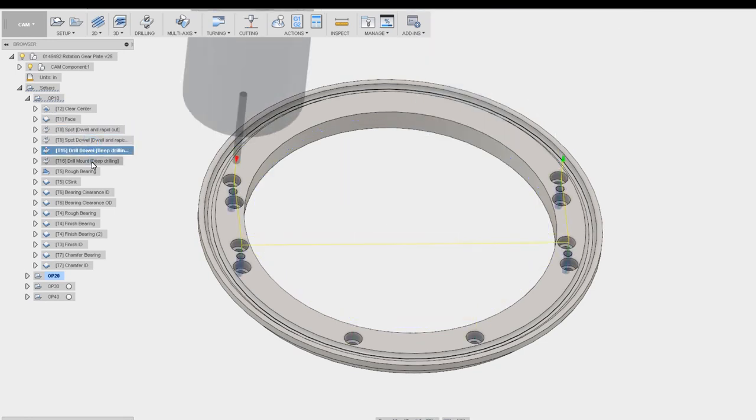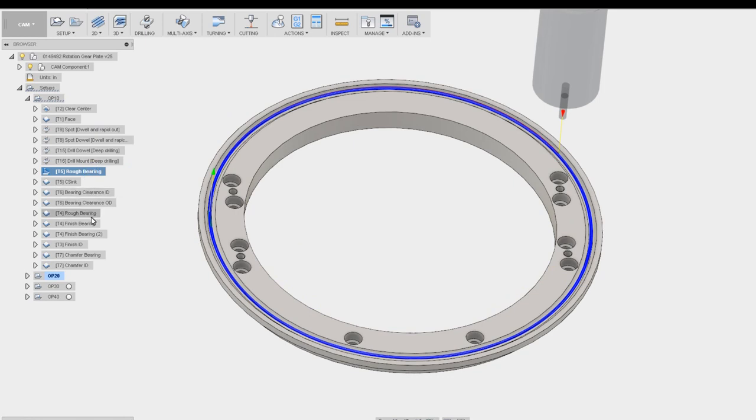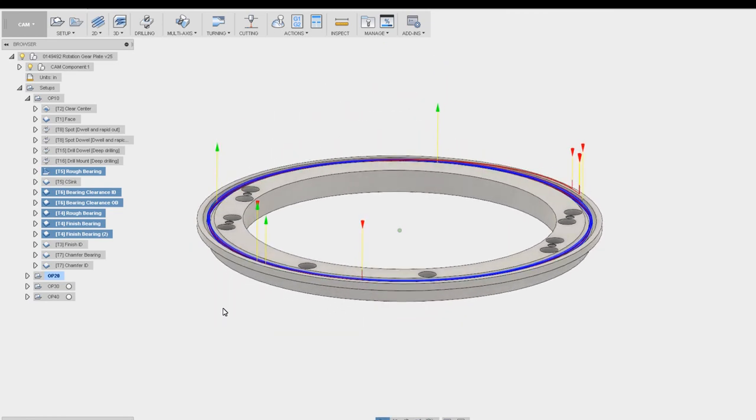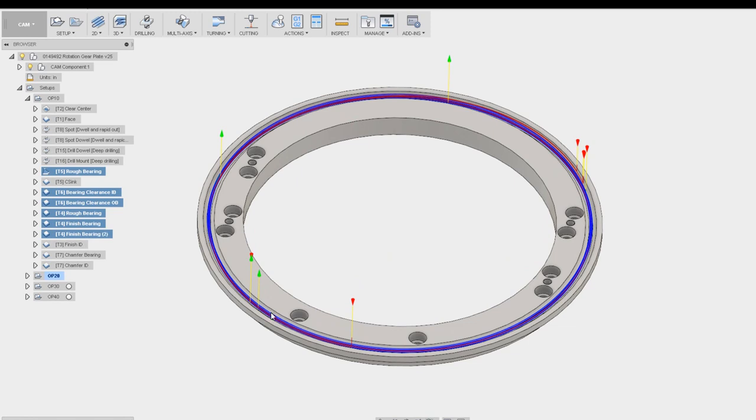Now we're going to put all these holes in, except for the countersink. All of these operations are just copy and pasted from the first part we did, because we're machining the exact same geometry here in the opposite groove, so we can use all the exact same tooling path. This was almost a no time operation to copy and paste that in.